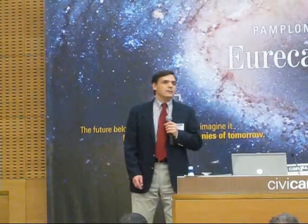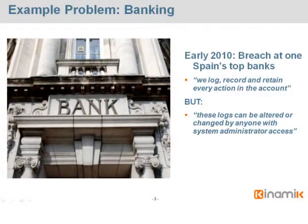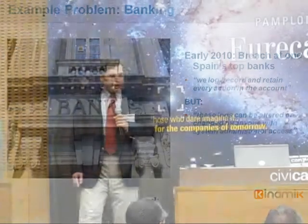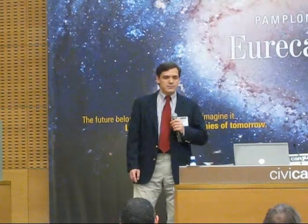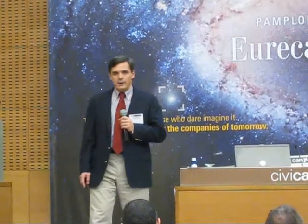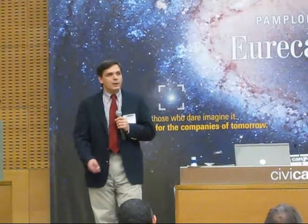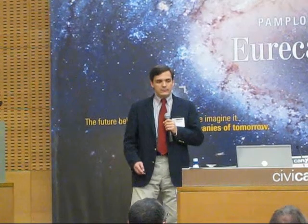Let me start by giving you some examples of problems you can see now in the real world. The first one is banking. Earlier this year, at one of Spain's main banks, there was a breach. In response to the security breach, their security team informed the investigators that we log and retain every action in the account, so we can prove that these actions were not fraudulent activities. Then, on further challenge, it was said that these logs could be altered or changed by someone with privileged system access — meaning the insider threat cannot be ruled out. With Kinamic Data Integrity's product, we would know that the data had not been manipulated, providing tamper-evident data for the administration.